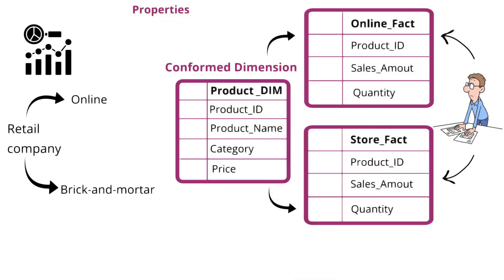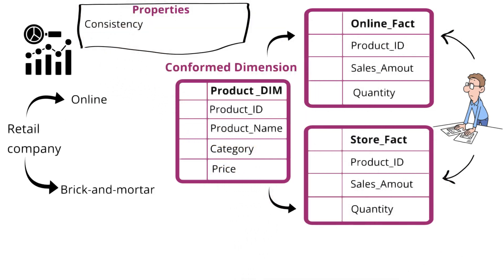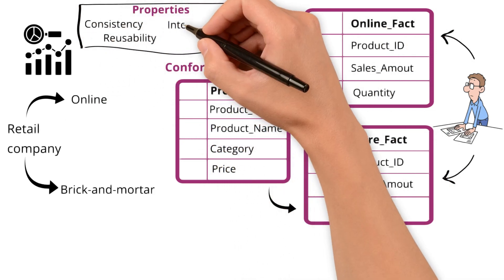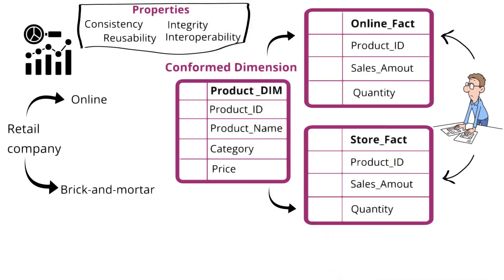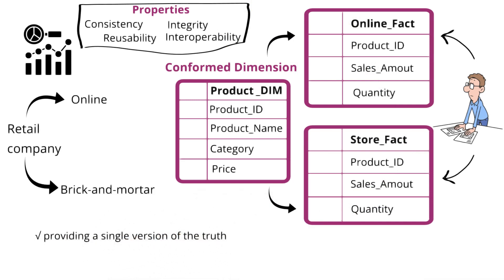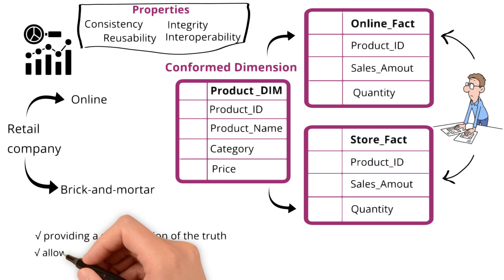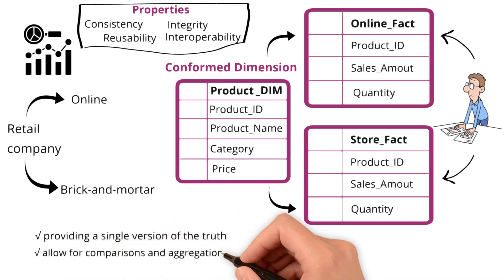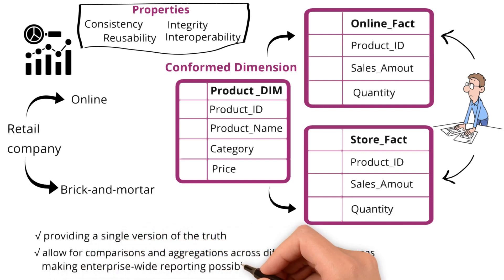What are the critical properties of conformed dimensions? Consistency, reusability, integrity, and interoperability. How do they help maintain data integrity? By providing a single version of truth. How about interoperability? They allow for comparisons and aggregations across different business areas, making enterprise-wide reporting possible.